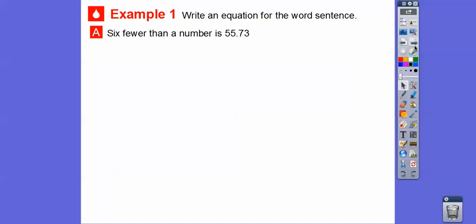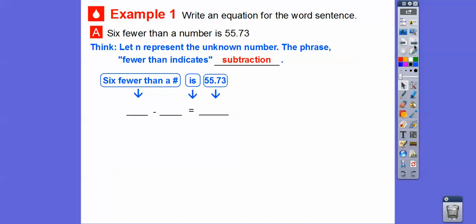There's another equation that we didn't write down, but that one would work. So write an equation for this word sentence: 6 fewer than a number is 55.73. I think we're going to let N represent our unknown number, and the phrase fewer than, what does fewer than mean? Well, to me, that means subtraction right there. So 6 fewer than, now this is a little bit tricky. When it says fewer than, well there's the 55.73 and there's the is. Is means equal there, and fewer than means subtraction, so we're going to have that. So is it N minus 6, or is it 6 minus N?